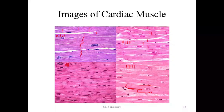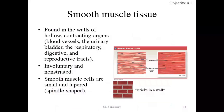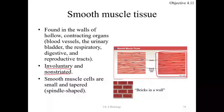Now, smooth muscle is found in the walls of hollow organs — any contracting organ such as blood vessels, urinary bladder, and digestive or reproductive tracts. Smooth muscle is involuntary and non-striated — there are no striations. These cells are tapered and spindle-shaped, stacking up like bricks in a wall.